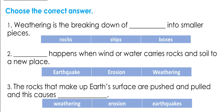Let's do the next task. We have three questions — choose the correct answer from three options. Number one: weathering is the breaking down of — rocks, ships, or boxes? Number two: what happens when wind or water carries rocks and soil to a new place — earthquake, erosion, or weathering? Number three: the rocks that make up Earth's surface are pushed and pulled, and it causes — weathering, erosion, or earthquake? Pause the video, answer, then continue to check.